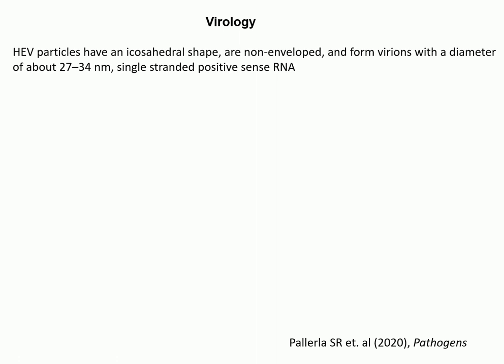Now let me talk about the virology — what is the Hepatitis E virus particle? The Hepatitis E virus particle has an icosahedral shape. They are non-enveloped and form virions with a diameter of 27 to 34 nanometers. These are single-stranded, positive-sense RNA molecules. Important points to remember: icosahedral shape, 27 to 34 nanometer diameter, and single-stranded positive-sense RNA.